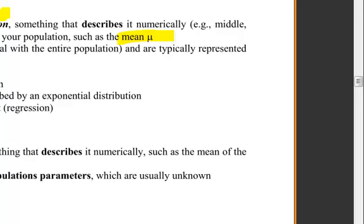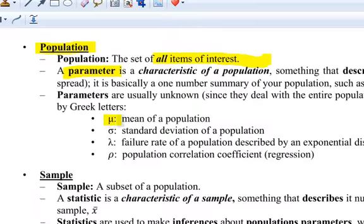Parameters are usually Greek letters, so you'll see mu for the mean of a population, sigma for standard deviation, lambda for failure rate, rho for population correlation coefficient. I think the big thing is population, you take everybody, and then you compute numerical summaries, and they're called parameters.